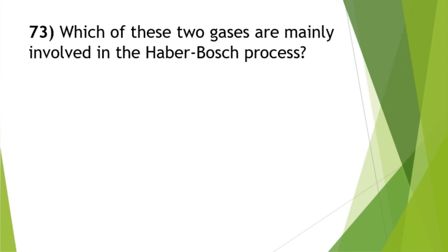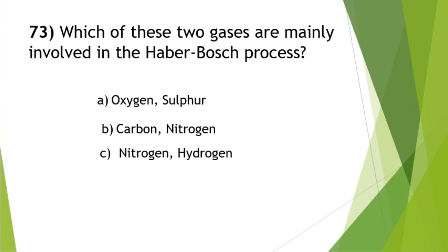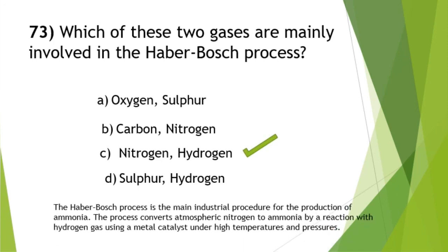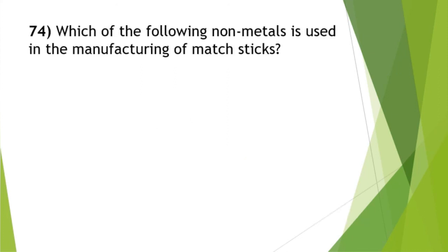Which two gases are mainly involved in the Haber-Bosch process? This is very important — it has appeared in UPSC examinations. The answer is option C — nitrogen and hydrogen. The Haber-Bosch process is the main industrial procedure for the production of ammonia. It converts atmospheric nitrogen to ammonia by reaction with hydrogen gas using a metal catalyst under high temperatures and pressures.